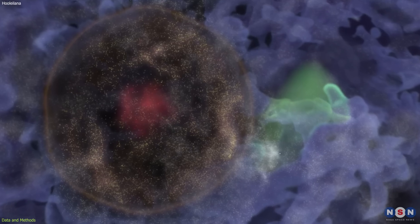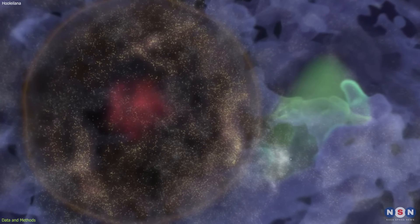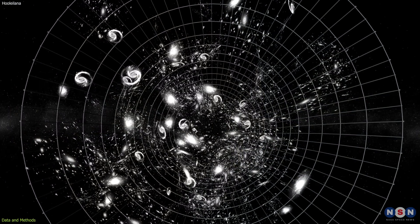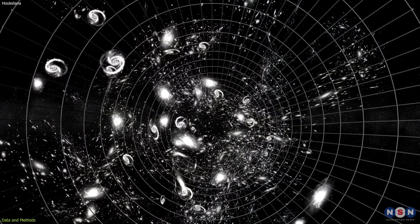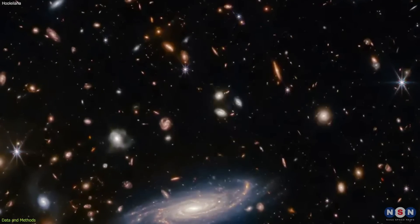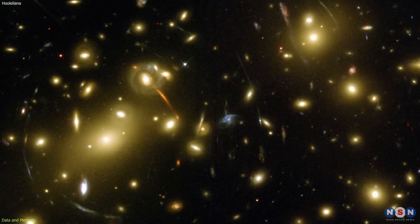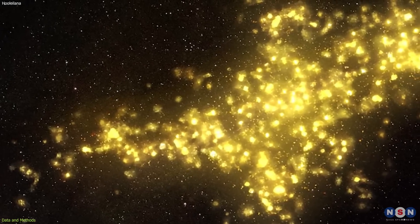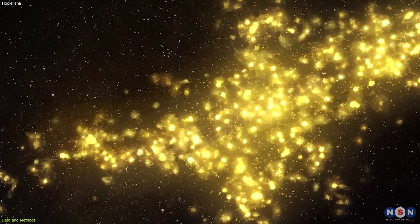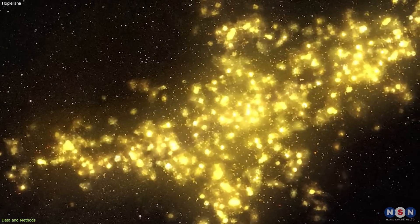However, finding a bubble of galaxies is not easy. There are many challenges and uncertainties involved in this process. For instance, there are errors in distance measurements due to observational limitations and cosmic variance, and also some effects of galaxy clustering and biasing that make it harder to distinguish between real and apparent structures.